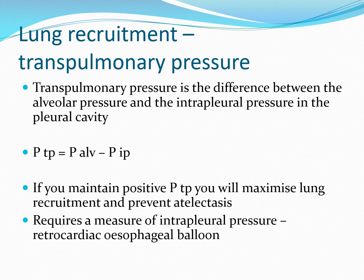One seemingly ideal method of individualizing PEEP for your patient is to measure the transpulmonary pressure — the difference between the pressure within the alveolus and the pressure within the pleural space. If you can maintain a positive transpulmonary pressure, you can maximize lung recruitment and prevent atelectasis. This does require special equipment: typically an NG tube with a balloon that sits behind the heart, connected to a pressure transducer to give you intrapleural pressure, with esophageal pressure used as a surrogate for intrapleural pressure. You can then titrate PEEP to maintain a constantly positive transpulmonary pressure. Many modern ventilators come with the ability to do this.